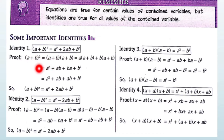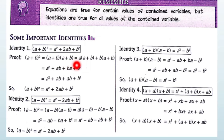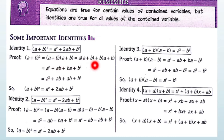The proof is also given for these identities. A plus B whole square equals to (A + B)(A + B) — we write them two times. First, A multiplied by (A + B), and then B multiplied by (A + B). When you solve them, you get A square plus AB plus BA plus B square.